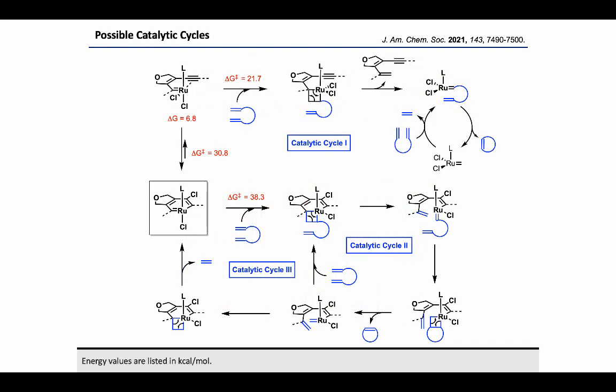The possible catalytic cycles were studied using DFT calculations. The first possibility — direct [2+2] cycloaddition between the ruthenobenzene complex and the diene — has a very high energy barrier of 38.3 kcal/mol and is probably not operating, ruling out catalytic cycles 2 and 3. Another possibility is that the ruthenobenzene complex undergoes cycloreversion to the alkyne chelate, and the [2+2] cycloaddition between the alkyne chelate and the 1,3-diene has a lower barrier of 21.7 kcal/mol, indicating catalytic cycle 1 may be operating. LCMS analysis of the crude reaction mixture detected the organic byproduct consistent with catalytic cycle 1. Thus, the ruthenobenzene complexes are actually pre-catalysts, slowly releasing the open form, which is the actual catalyst, contributing to the high recoverability and robustness of the complex.